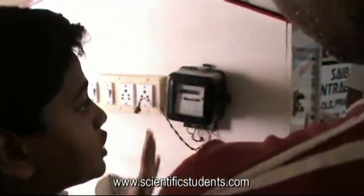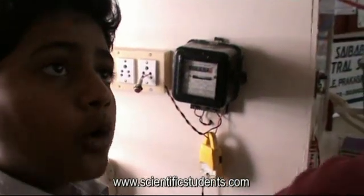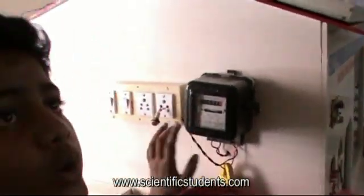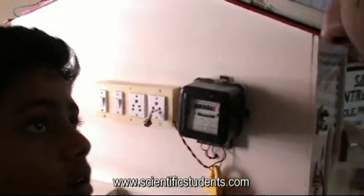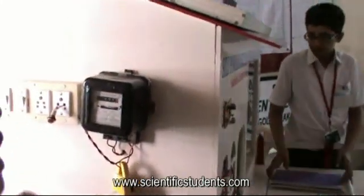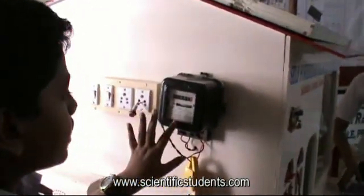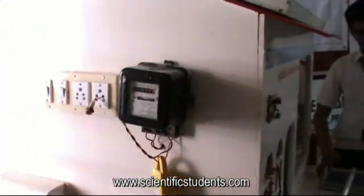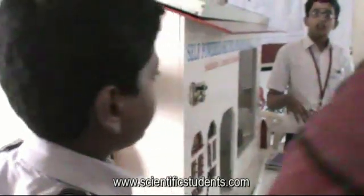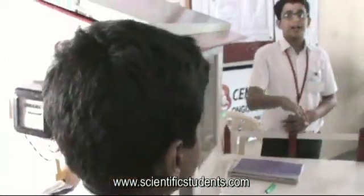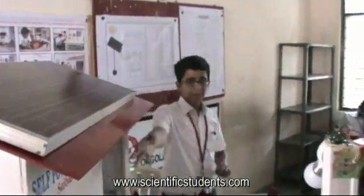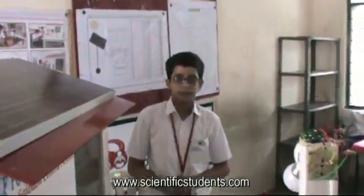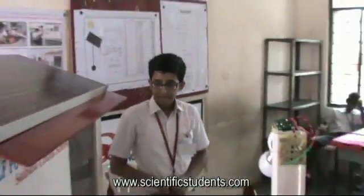This energy meter shows how much current we are supplying to the government. It is shown by the energy meter in units. We also have another meter for measuring our own consumption. This energy meter is connected to the inverter. After running the loads and after charging the battery, even if you have excess power, you can supply it to the government. The battery is charged to the limit.